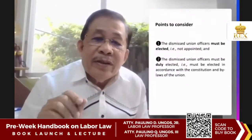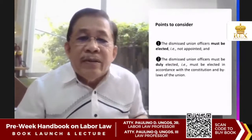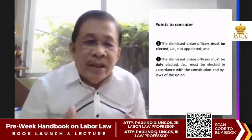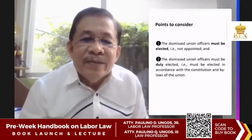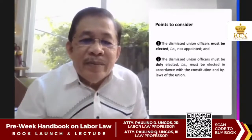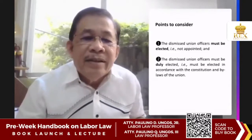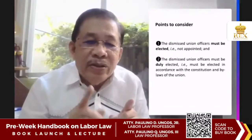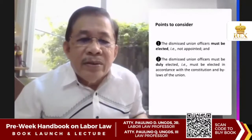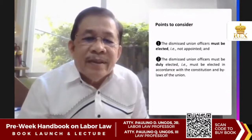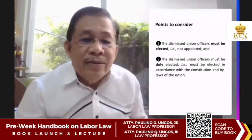There are two points you should consider in that provision. The first is that the dismissed officers must be elected, not appointed — so watch out if the problem says appointed, because then the cooling-off period must be observed. The second point is that the dismissed union officers must be duly elected, meaning they were elected in accordance with the constitution and bylaws. If the election did not follow the constitution and bylaws, then the union officers are not duly elected.